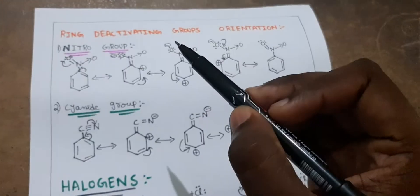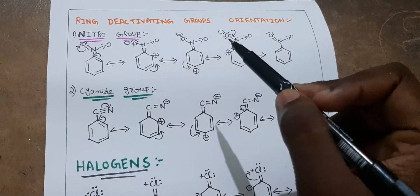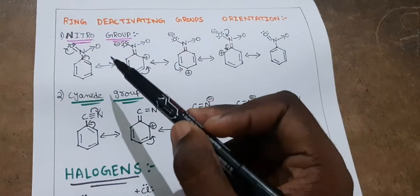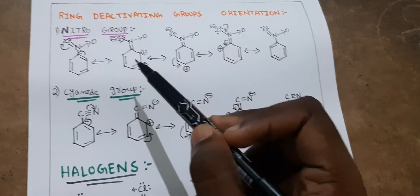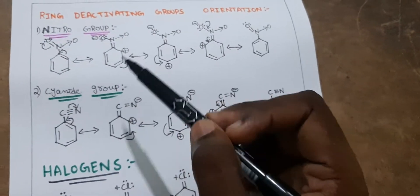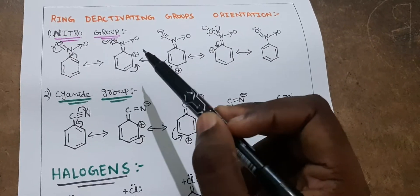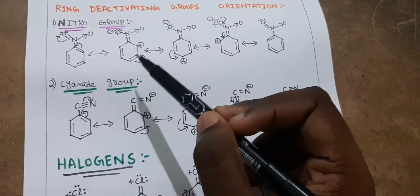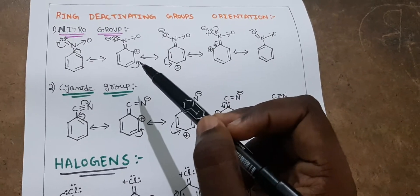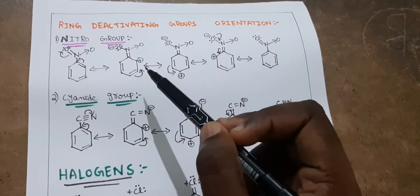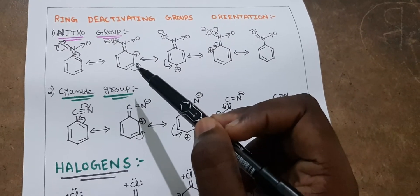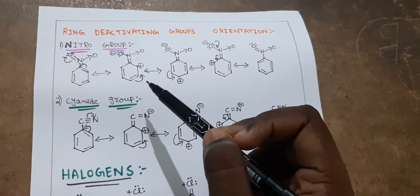Next, the orientation of ring deactivating groups. Ring deactivating groups are meta directing groups. During delocalization of electrons, positive charges appear at the ortho and para positions. That means the electron density at ortho and para positions decreases drastically. As a result, the meta position will have comparatively higher electron density. So in ring deactivating groups, the meta position has high electron density compared to ortho and para positions.